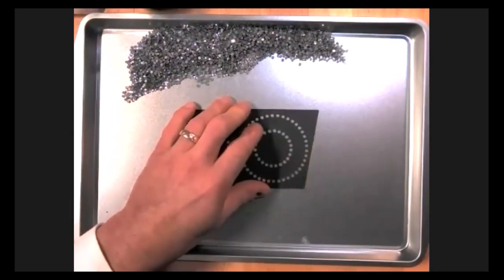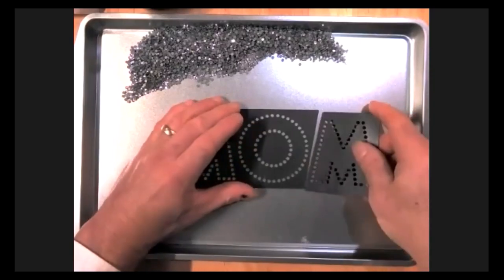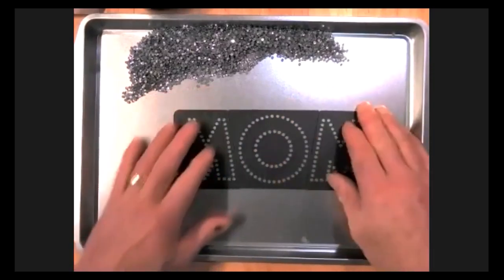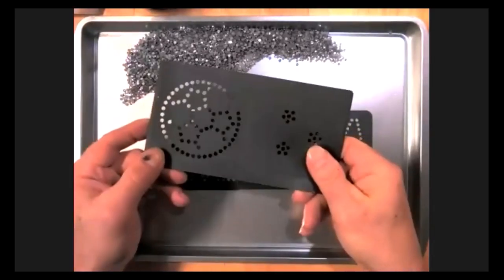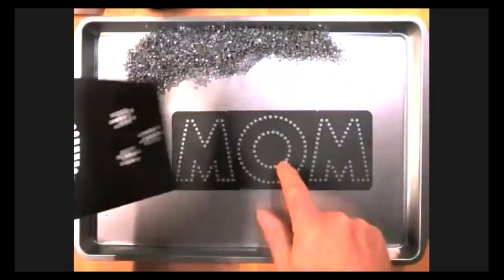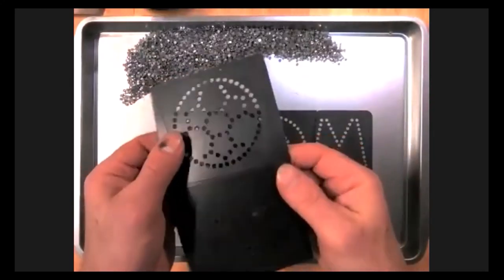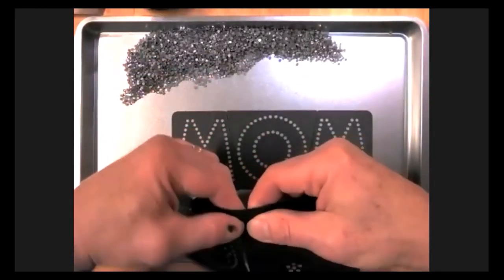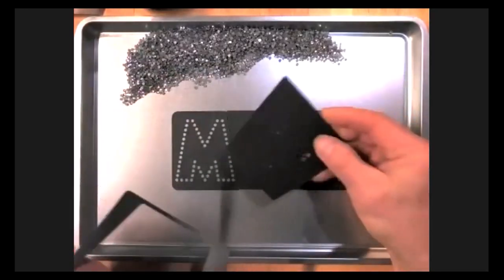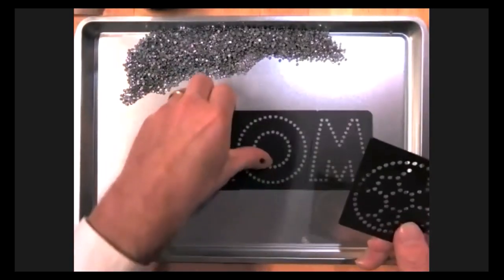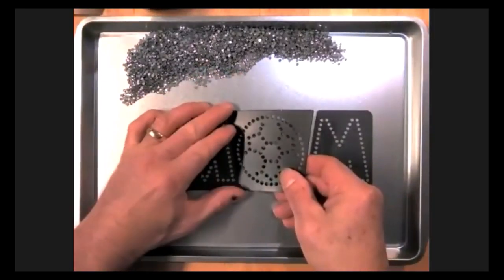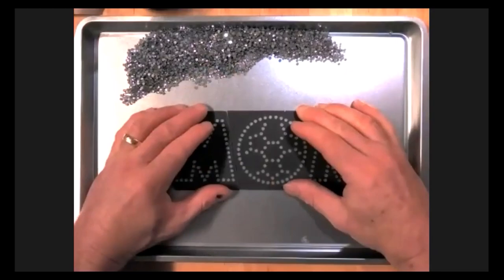Instead you can do M-O-M which spells out mom, but we're actually going to do a soccer mom one. So let me get that soccer mom template. This is our soccer ball that's going to replace the O. So all you need to do to break it out, you can break it out and separate it from the carrier sheet. Just give a little crease and pull that out. So instead of the O, we're going to put in the soccer ball. Line these up nice and straight.